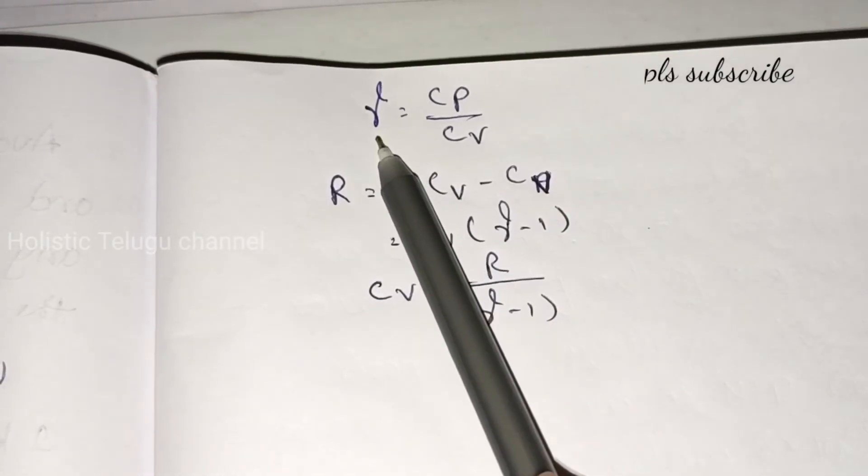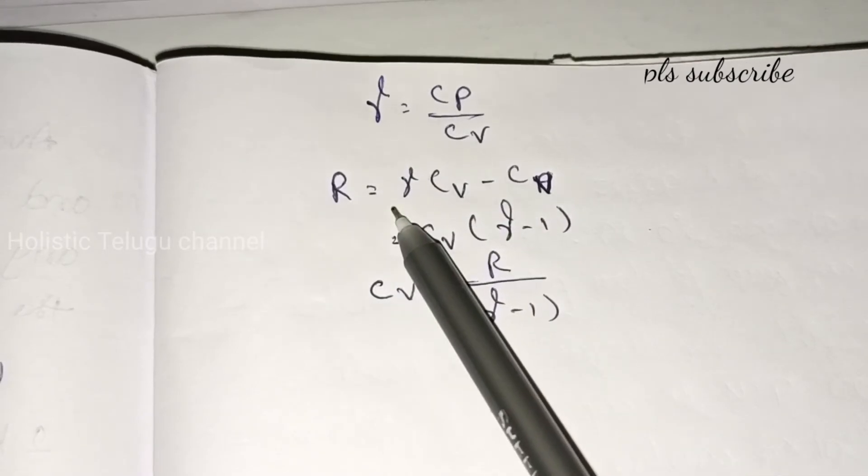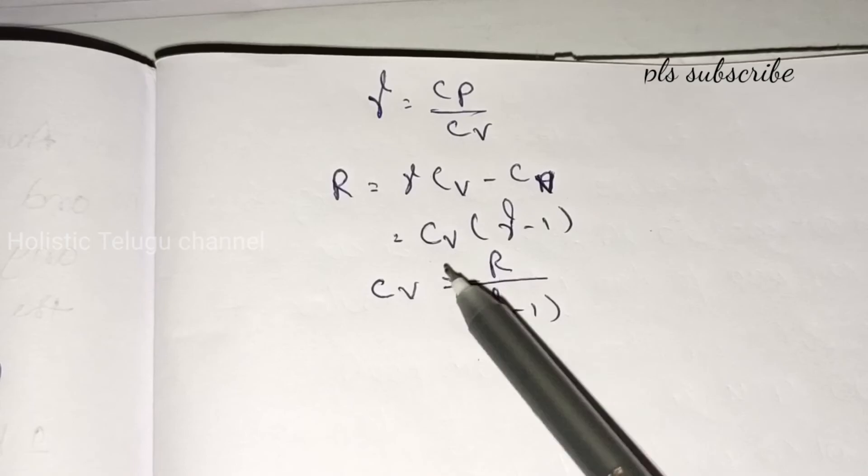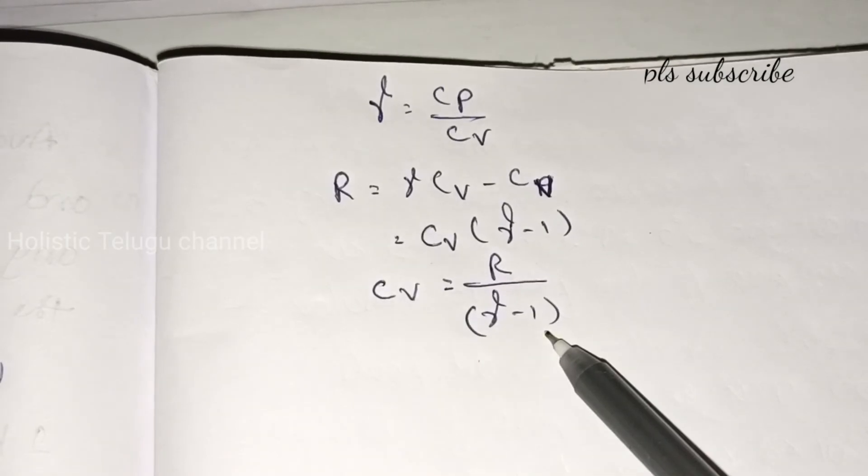Similarly, from adiabatic index gamma equal to Cp by Cv, we get R equal to gamma Cv minus Cv. Here taking Cv common, gamma minus 1, so Cv equal to R by (gamma minus 1).